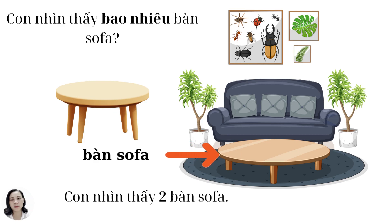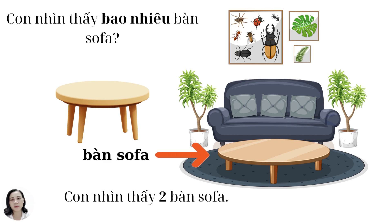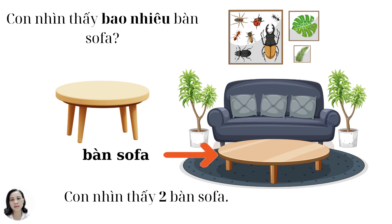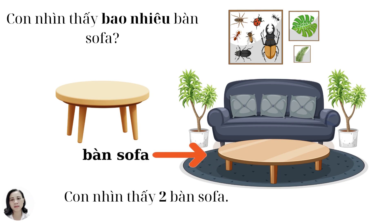Con nhìn thấy bao nhiêu bàn xô pha? Con nhìn thấy hai bàn xô pha, right? Bàn xô pha màu gì? Bàn xô pha màu nâu, right? Easy.